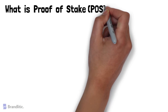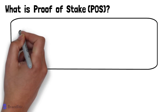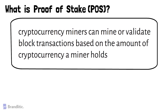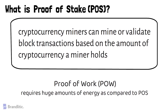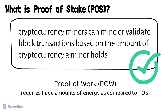So what is Proof of Stake? Proof of Stake is a consensus mechanism where cryptocurrency miners can mine or validate block transactions based on the amount of cryptocurrency a miner holds. It was created as an alternative to Proof of Work, which is the original consensus algorithm in blockchain technology used to confirm transactions and add new blocks to the chain. As Proof of Work requires a huge amount of energy and eventually leads to miners needing to sell their coins to pay the bill, Proof of Stake gives mining power based on the percentage of coins held by a miner, which is more handy and doable.